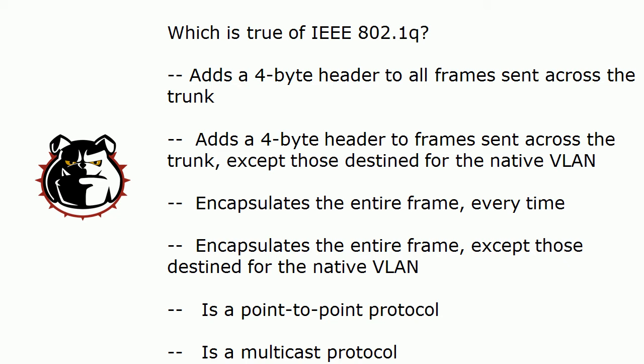Another great thing about .1Q is that if a frame is destined for the native VLAN, it doesn't even have that header put on — it's just sent. So that is a lot less work and a lot less overhead. Trunking is definitely a point-to-point deal, so .1Q is a point-to-point protocol. To summarize: .1Q adds a four-byte header to frames going across the trunk except those destined for the native VLAN, and it is a point-to-point protocol.